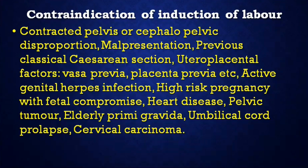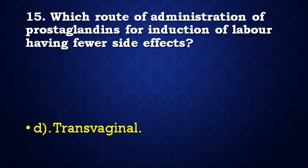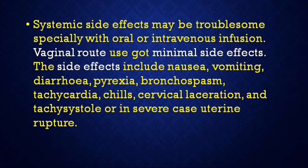Next question: Which route of administration of prostaglandins for induction of labour has fewer side effects — oral, intravenous, intramuscular, or transvaginal? Correct answer is transvaginal. Systemic side effects may be troublesome especially with oral or intravenous infusion; the vaginal route has minimal side effects. Side effects include nausea, vomiting, diarrhea, pyrexia, bronchospasm, tachycardia, chills, cervical laceration, and tachysystole, or in severe cases uterine rupture.